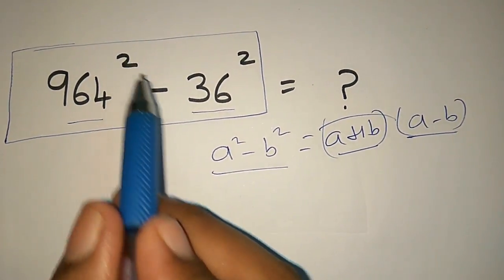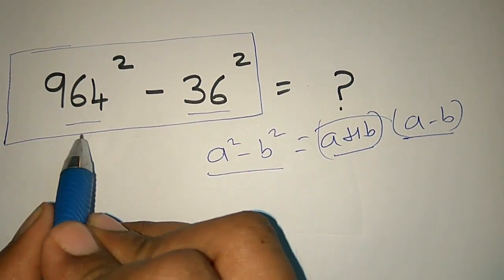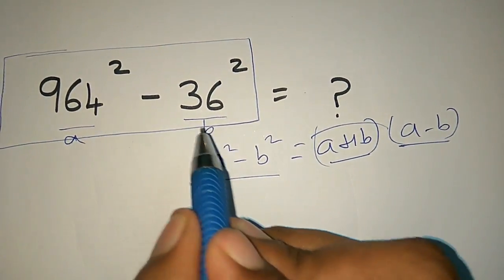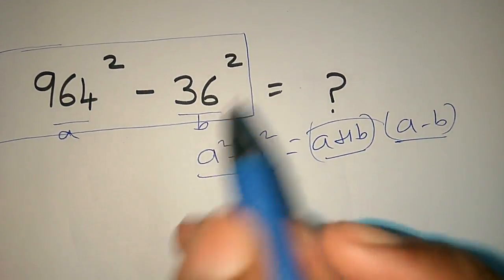Now, this is a square and this is b square. So, a² - b² equals (a+b)(a-b). Let's try this.